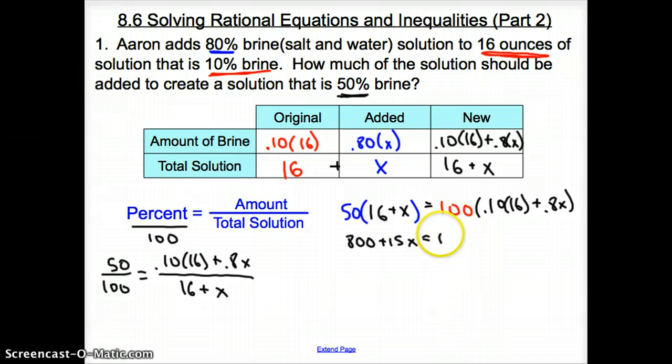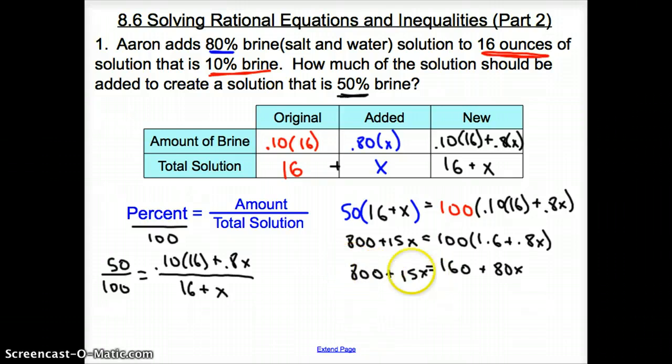Before I distribute that 100, I'm going to clean what is in the parentheses. It's going to be 1.6 because it's 0.1 times 16 plus 0.8x. Now I'm going to distribute that 100 through those parentheses. So it is 160 plus 80x. That's going to equal 800 plus 50x.